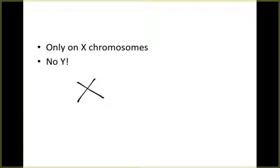We use superscript — either a capital letter or a lowercase letter — to determine whether the trait is dominant or recessive. For the Y chromosome, we just leave it as Y. This helps us determine gender as well as which genders might carry certain traits to the next generation. We're going to look at this today to get a clearer understanding of how sex-linked traits are inherited, because they work a little differently.